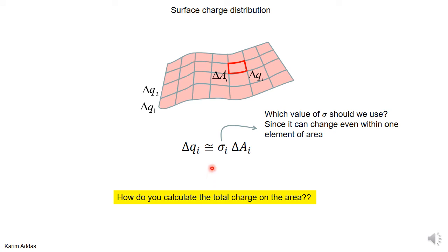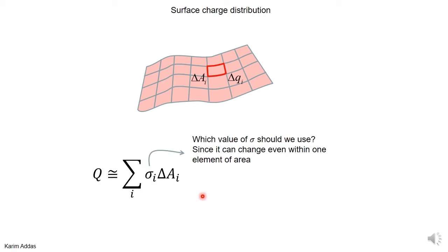What if you want to get the total charge on this surface? One way is to cut up the surface into a finite number of elements of area. The charge in each element is approximately sigma at that element times the area. This is approximate because, as long as you have a finite element of area, sigma could change within it from point to point. So we make an approximate formula: sum over all elements of sigma times delta A, using the value of sigma at the center of each element. But again, this is just an approximation.